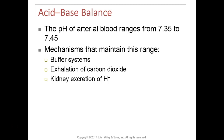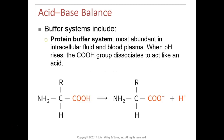There are three principal buffer systems in the body. The first and most abundant is the protein buffering system. A buffer is a substance that can do one of two things: if the solution is too alkaline, a buffer can release hydrogen ions, which is acid, into the fluid to bring the pH back down.